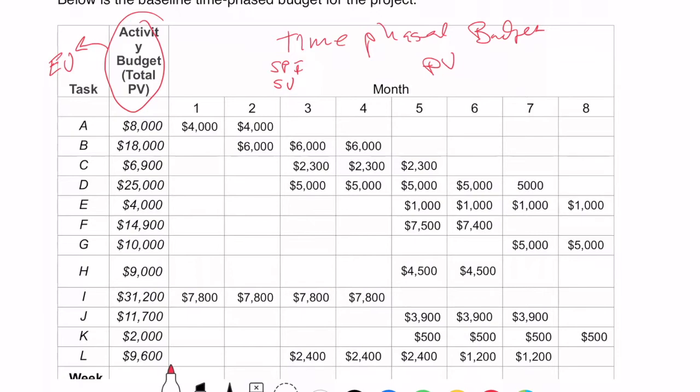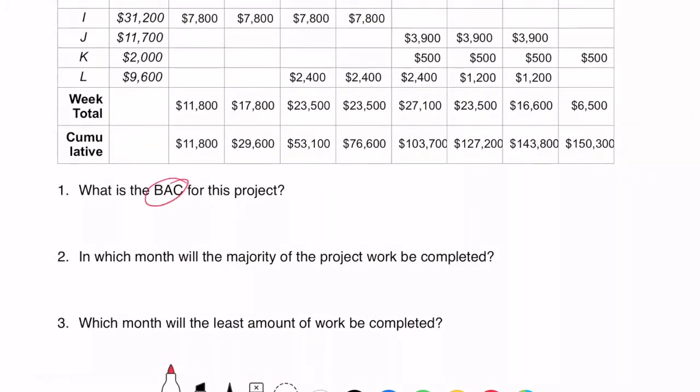So let's take a look at this. There are some simple questions that are asked in this worksheet. What is the BAC for this project? Well, that's really just the total planned value. And in fact, we see a column here for cumulative planned value along the bottom. So this right down here is going to be the BAC. In which month will the majority of the work be completed? Well, that's going to be the month in which we have the highest number in the weekly total for PV. So in that case, it's going to be right here. So week five.